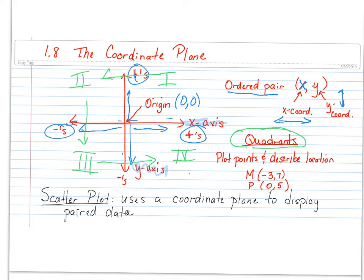So, it says plot points and describe the location. We are going to plot the point M to start with. So, it is the point (-3,7). This is my x, this is my y. So, I'm going to start at the origin, and I'm going to move back three: one, two, three. And from there, I have to move up seven: one, two, three,